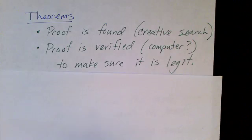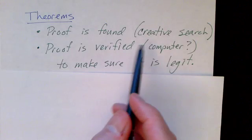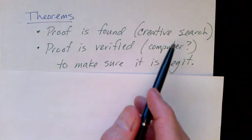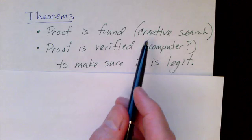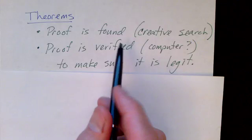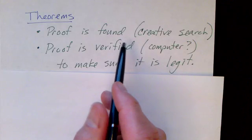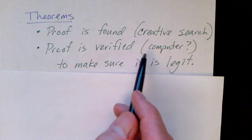Finding proofs is difficult. And in general it requires some sort of creative search process. Mathematicians do this for a living. They search for proofs. And once a proof is found, each step in the proof can be verified, perhaps by a computer.